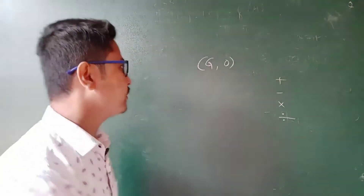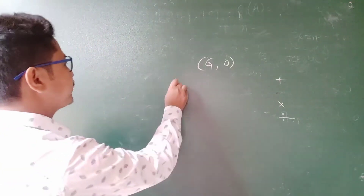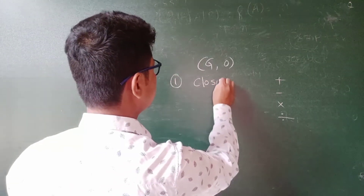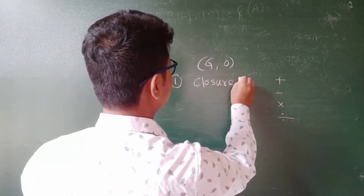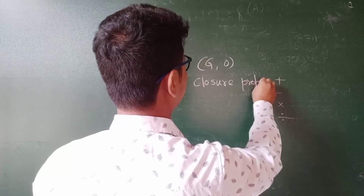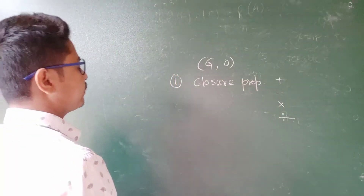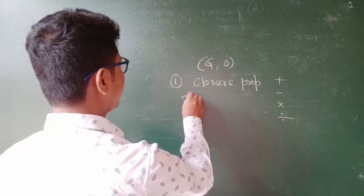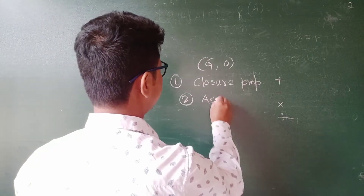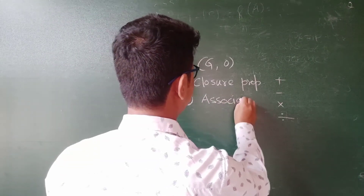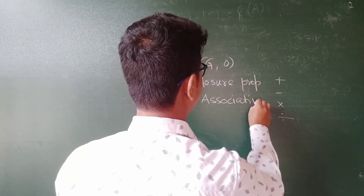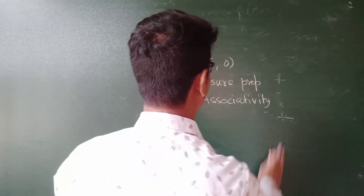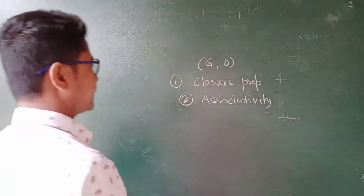So here is the example. First example. Closure property — to satisfy the closure property, as discussed in the last video. Do you know about associativity? Associativity. Here, to satisfy — that means associative.